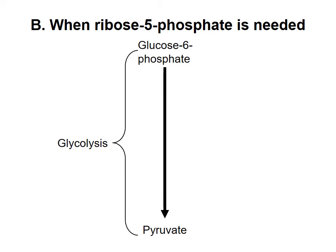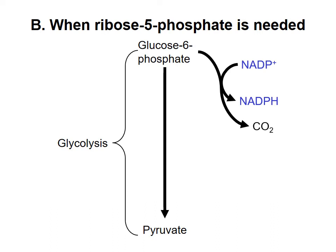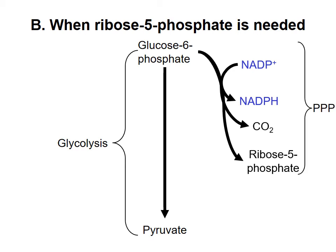The other version of the pentose phosphate pathway occurs when the cell prioritizes nucleotide synthesis. As in the first version, some carbon is oxidized to CO2 to produce NADPH. However, the remaining carbons do not go back into glycolysis, but are converted to ribose 5-phosphate. Thus, the major products of this version of the pentose phosphate pathway are NADPH and ribose 5-phosphate.